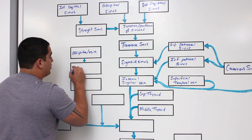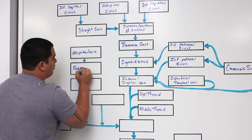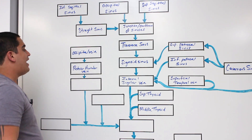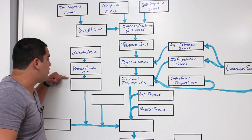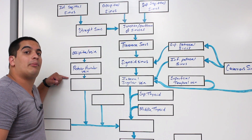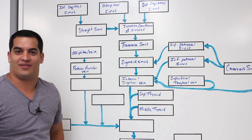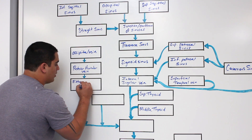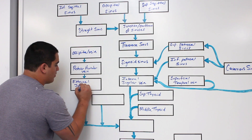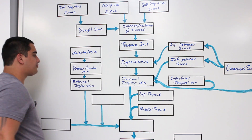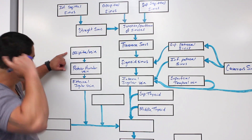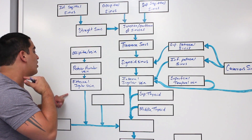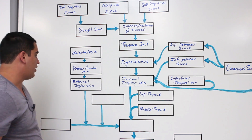The posterior auricular vein dumps into a structure that is more external than the internal jugular vein — called the external jugular vein. This vein is more superficial, bringing blood from the occipital region and from around and behind the ear. It runs over the sternocleidomastoid muscle in the neck.